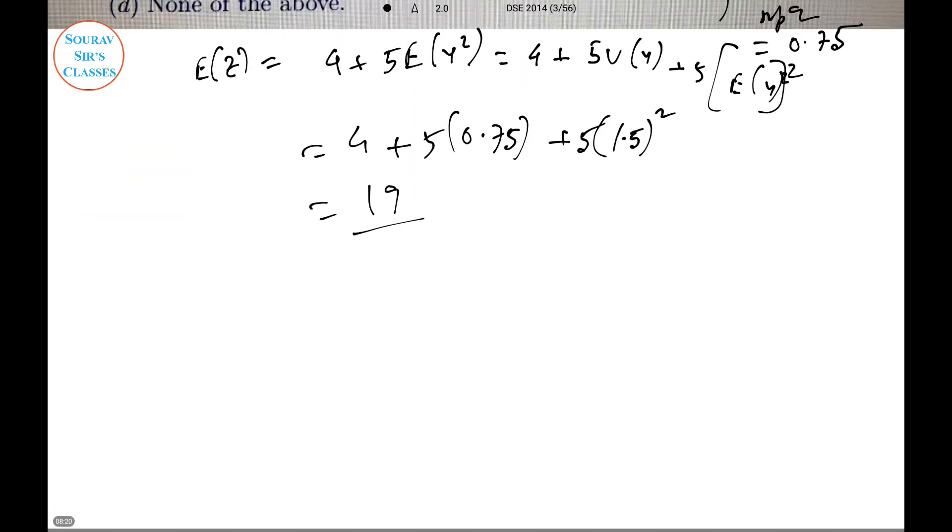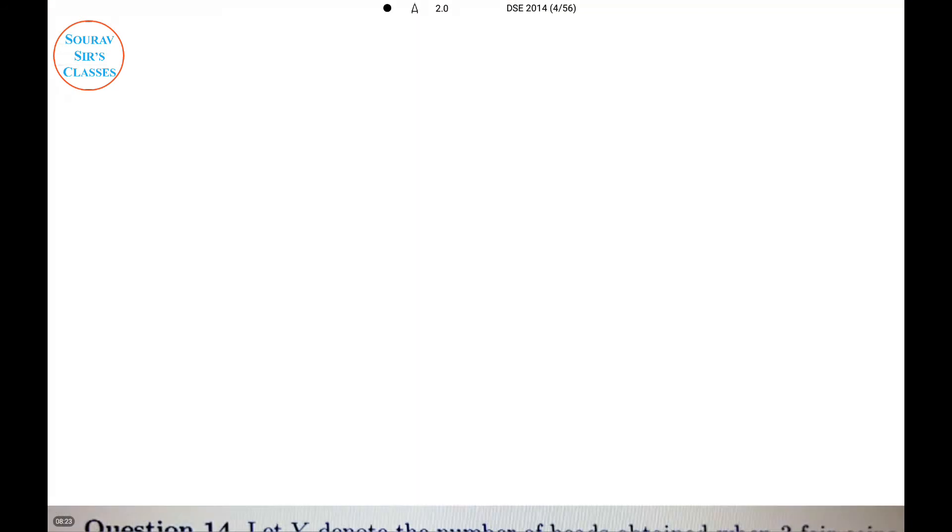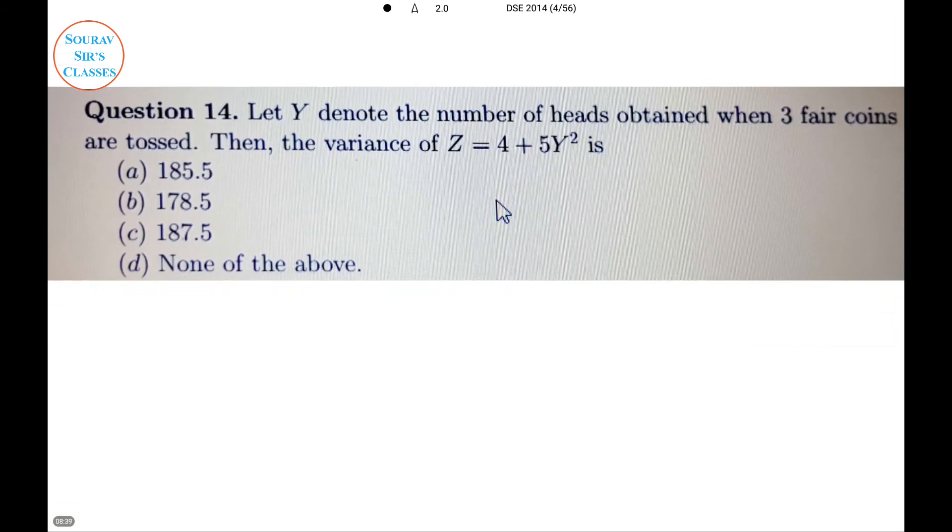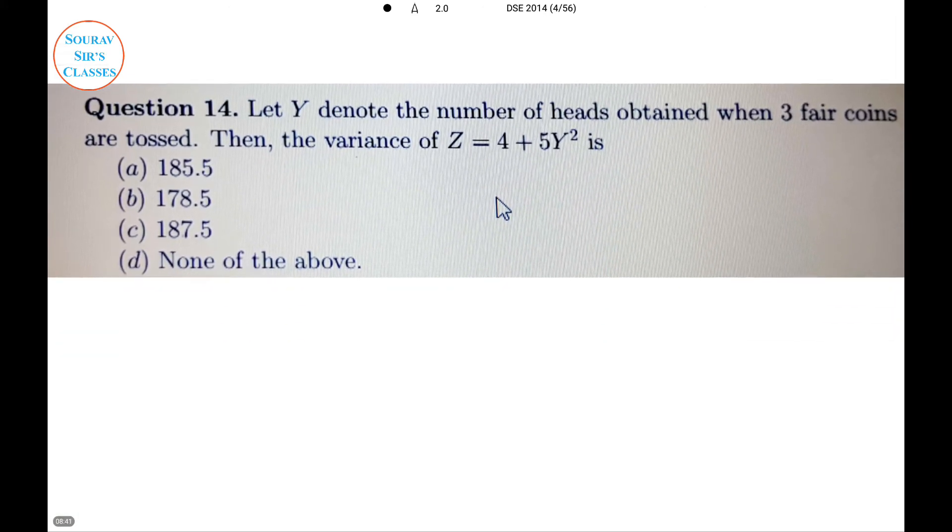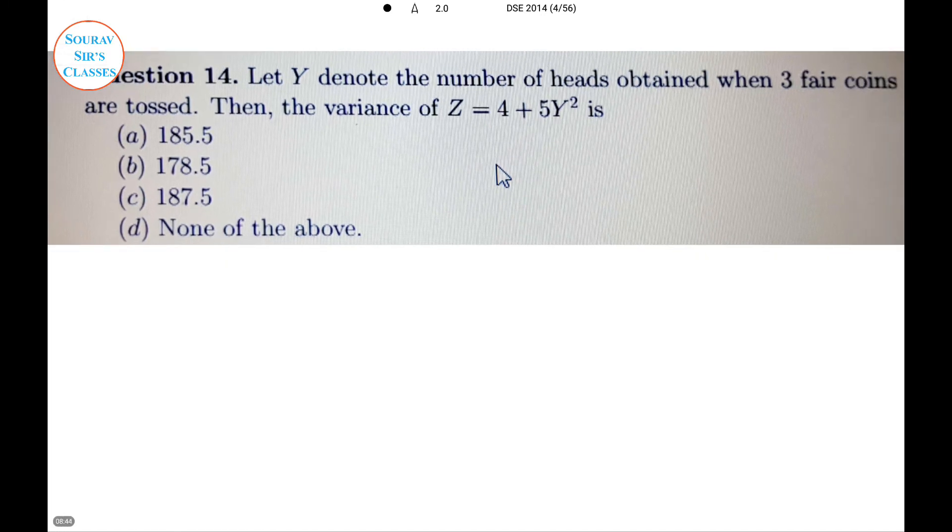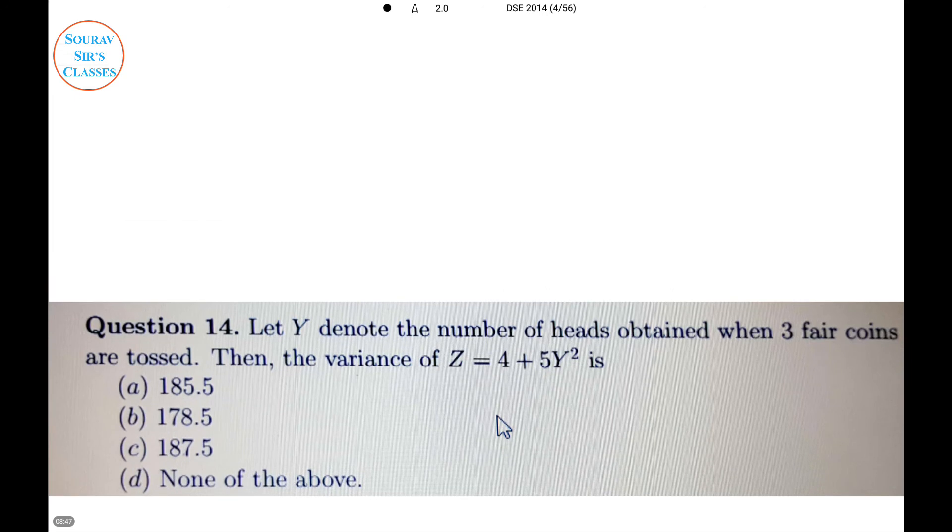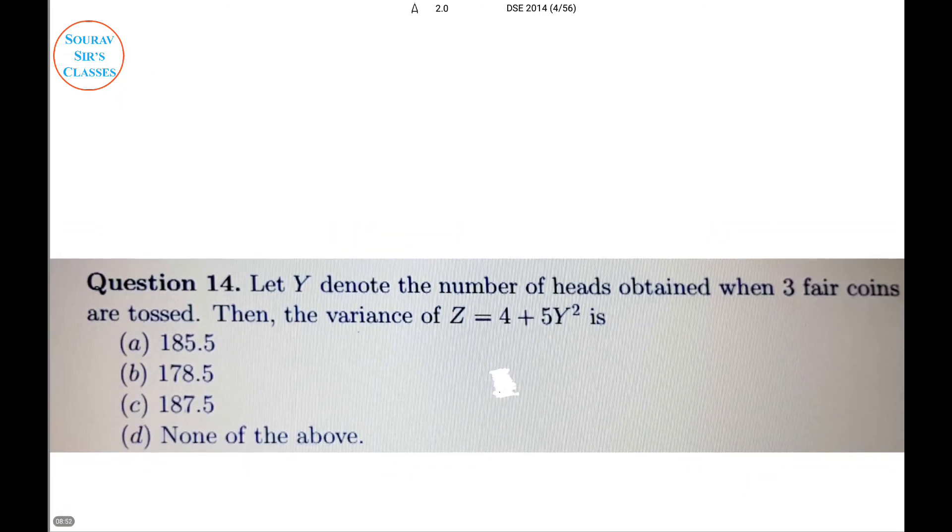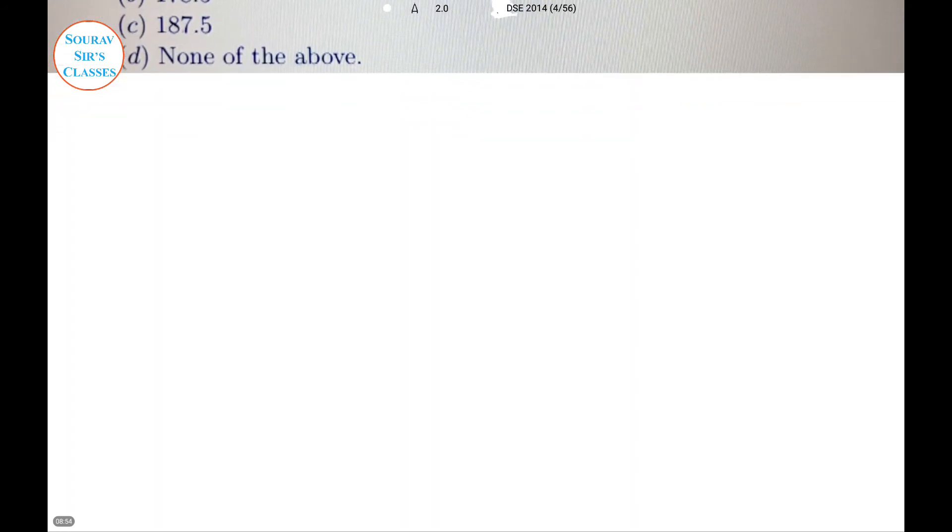By calculating, you can see option C is the correct option. Now proceeding to next question, question number 4. Here they are talking about a similar incident. This is the variance of E of 4Y square, and they denote the number of heads as well. E of 4Y squared, let me write the function properly first.